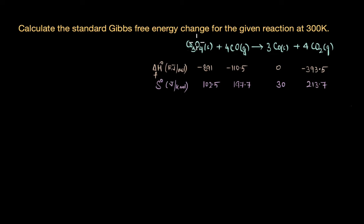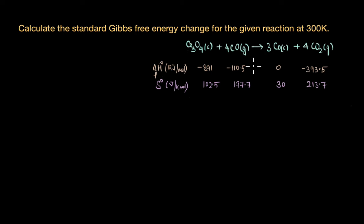In this video we are going to solve a couple of numerical questions on how to calculate standard Gibbs free energy change for different reactions. The first question asks for the reaction CO₃O₄ + 4CO → 3Co + 4CO₂: calculate the standard Gibbs free energy change. We have the standard enthalpy of formation and standard entropy values for each reactant and product given.